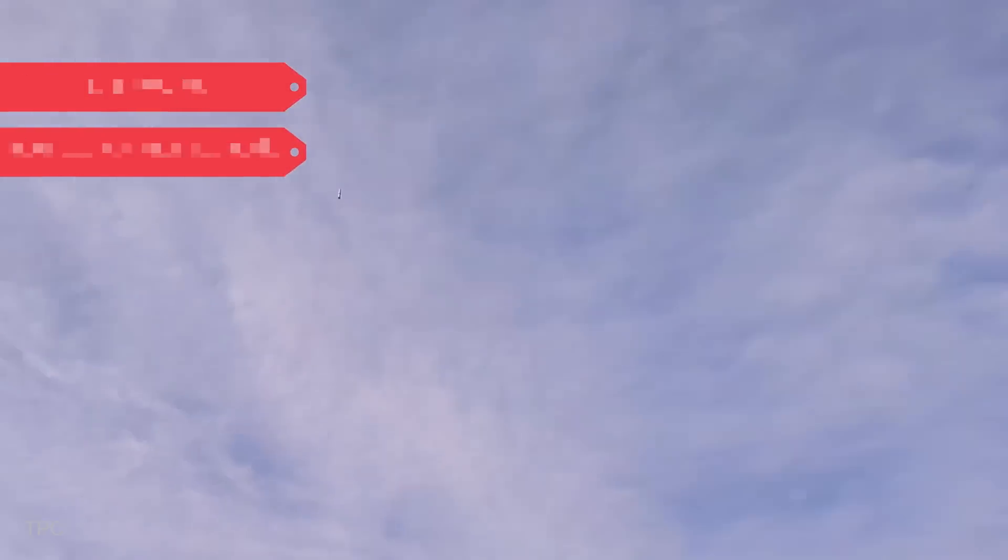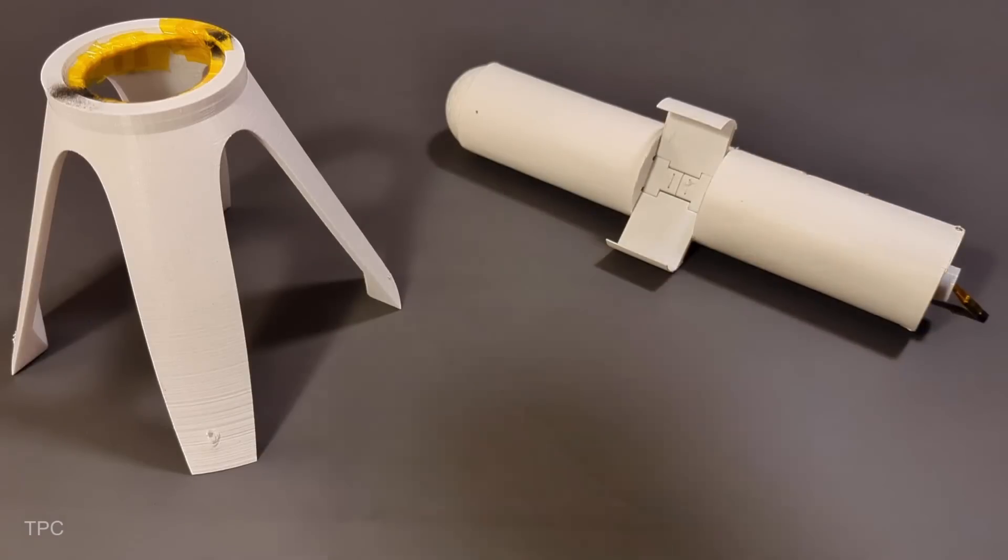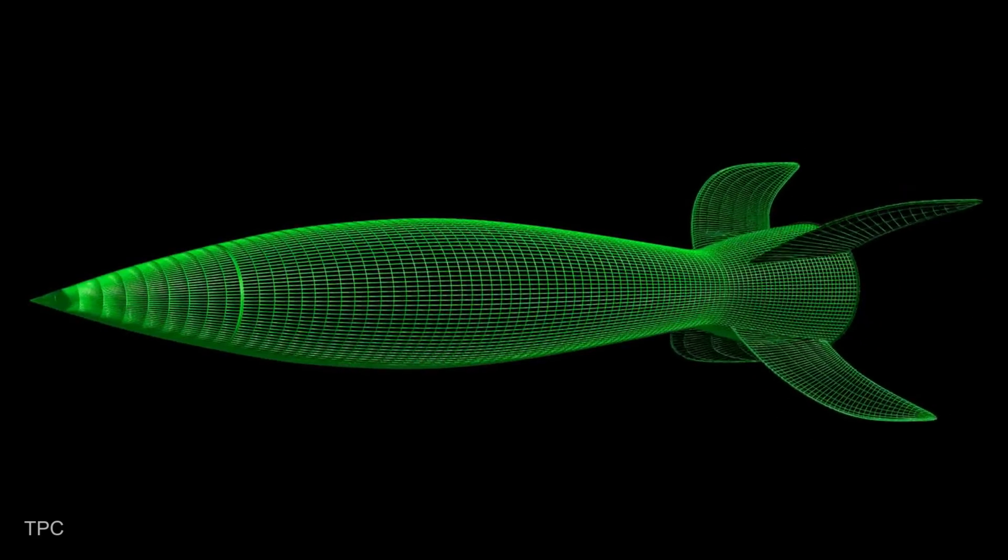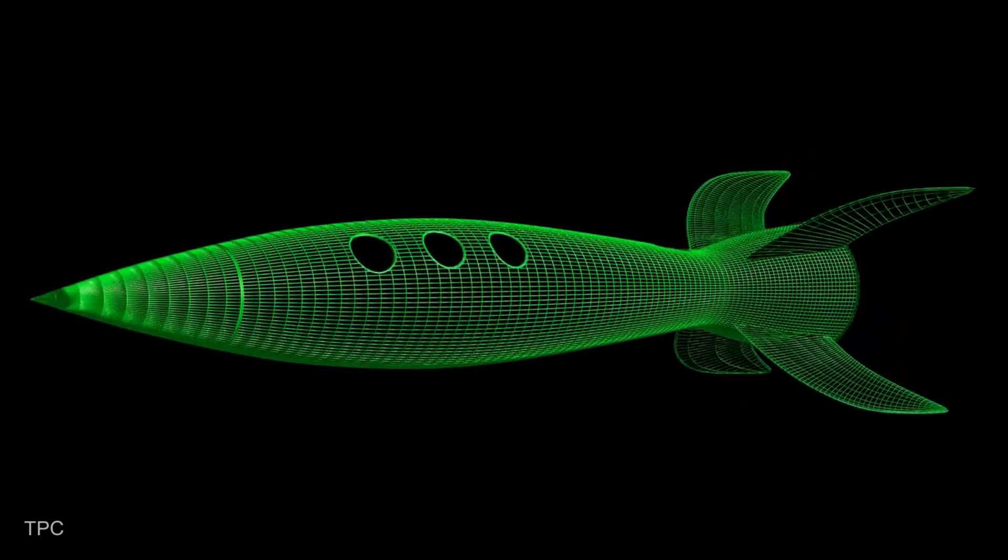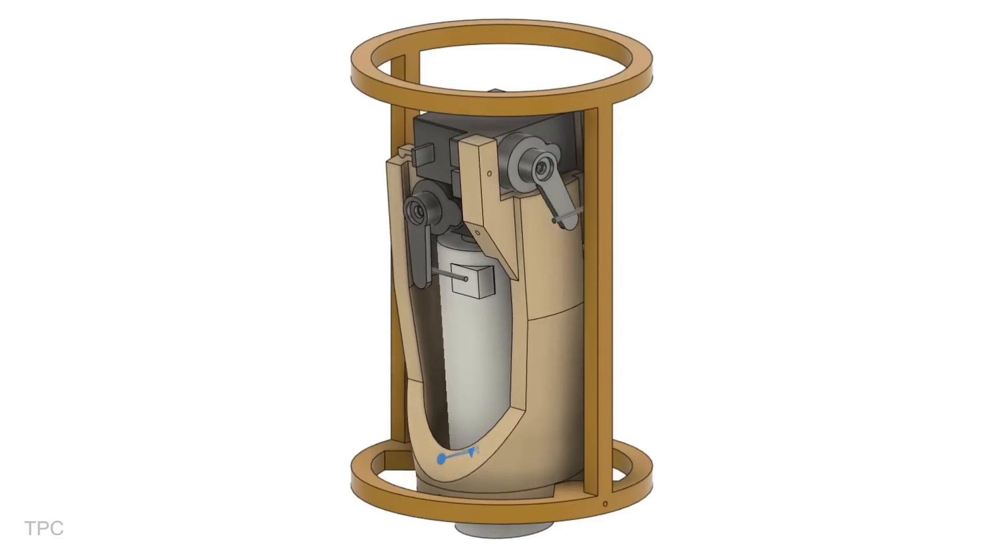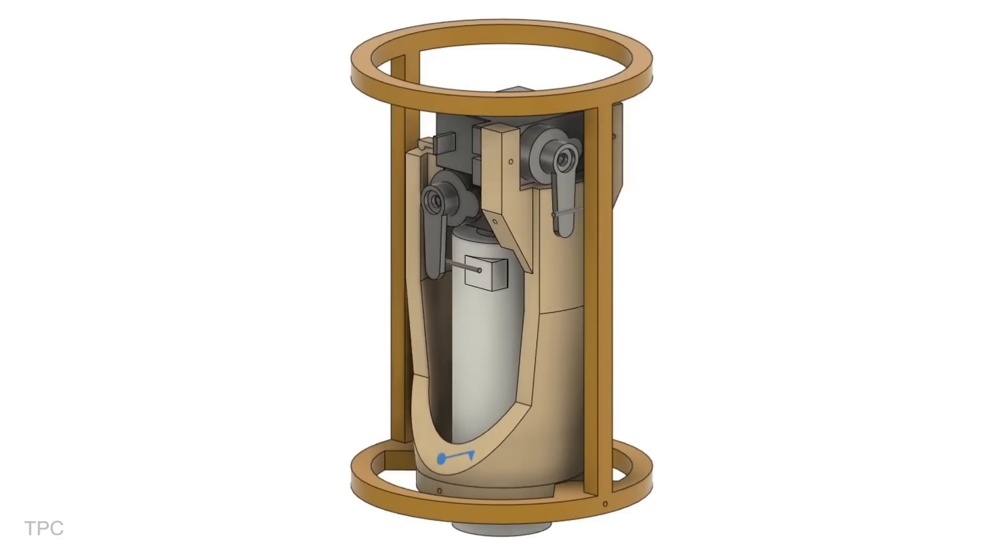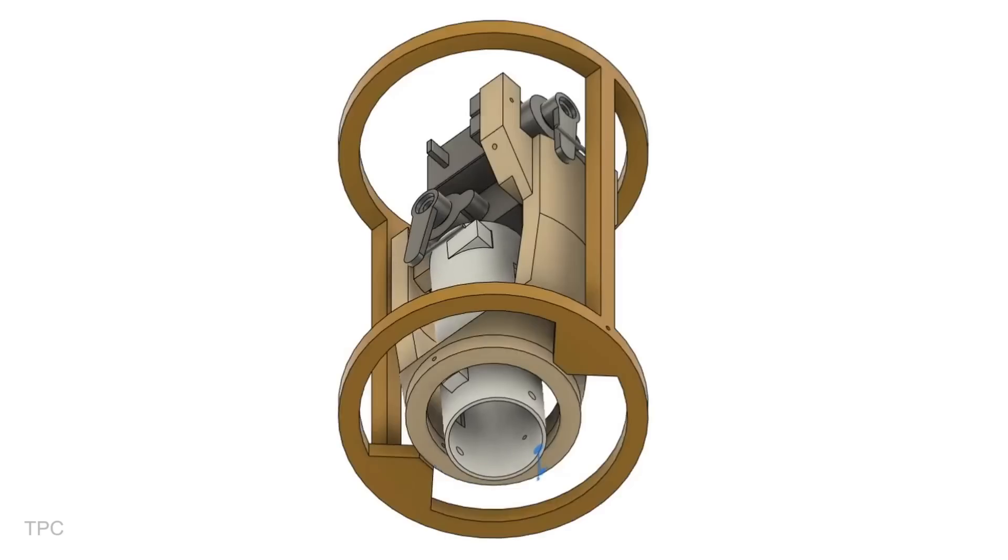Number 10. Dimitri made this model rocket with an advanced thrust vector control system designed to achieve actively stabilized flight. Unlike typical model rockets that rely on aerodynamic fins, this rocket uses two servo motors to adjust the angle of the rocket's motor nozzle, controlling its direction during flight.